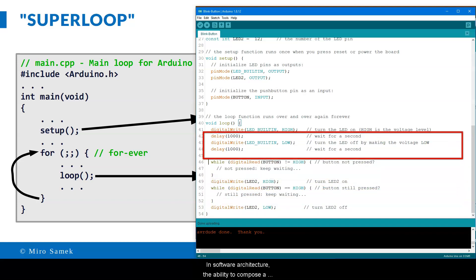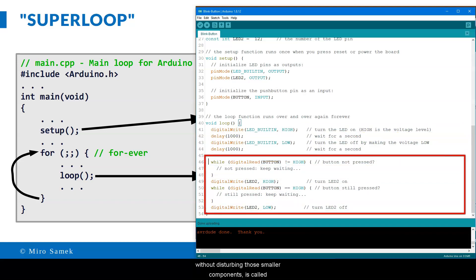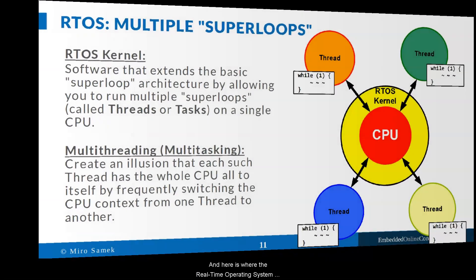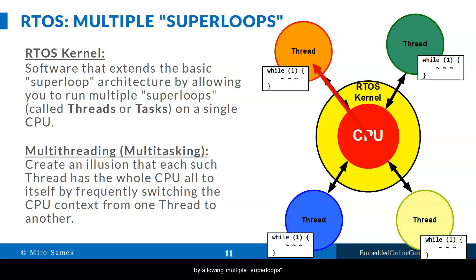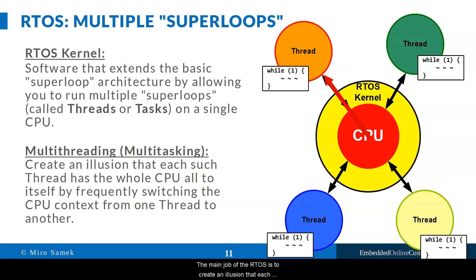In software architecture, the ability to compose a system from smaller components without disturbing those smaller components is called composability. In this sense, the sequential superloop architecture is not composable. And here is where the real-time operating system, RTOS, comes in. The significance of an RTOS is that it makes sequential architecture composable again by allowing multiple superloops to execute seemingly simultaneously on a single CPU. The main job of the RTOS is to create an illusion that each such superloop, called a thread or a task, has the entire CPU all to itself.